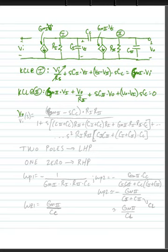Alright, we would get Vout over VI with respect to S is equal to GM2 minus SCC times R1, R2, plus GM2, divided by 1 plus S times C2 plus CC times R2, plus C1 plus CC times R1, plus GM2 times R1, plus R2 times Z1, minus R2, times CC.